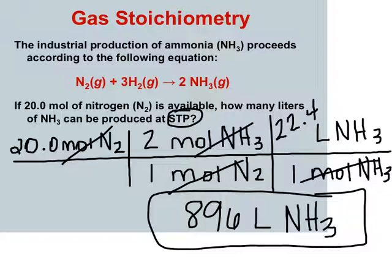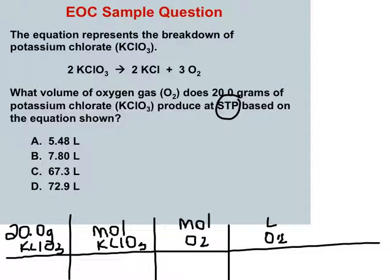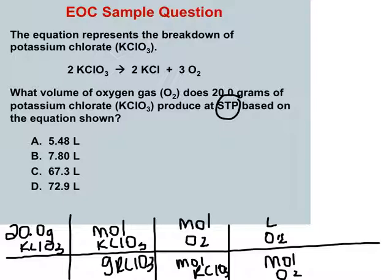Look at the next problem. Give it a shot because I'm about to go solve it. So this came directly from the Tennessee EOC practice test. Check out the equation. It's a decomposition of potassium chlorate, and it wants to know what volume, liters, of oxygen does 20 grams of potassium chlorate produce at STP, meaning one mole equals 22.4 liters. Based on the equation above. Hopefully you know we're going to go from grams of our given to moles of our given to moles of our unknown to liters of our unknown. Fill in that bottom thing with units, then we'll go back for numbers.